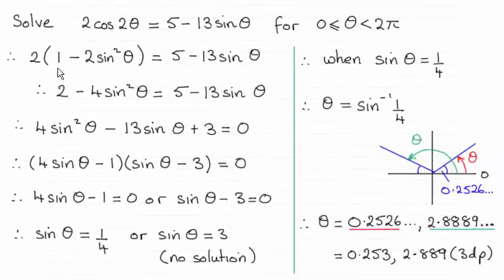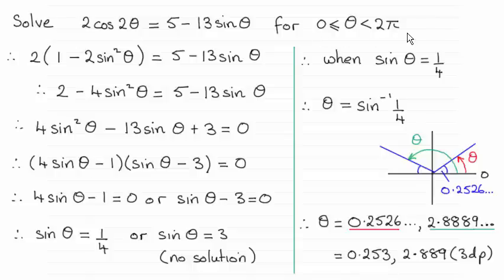Hi there. Now for this question we had to solve this equation in this given range, and the answers to three decimal places as required were 0.253 and 2.889 radians.